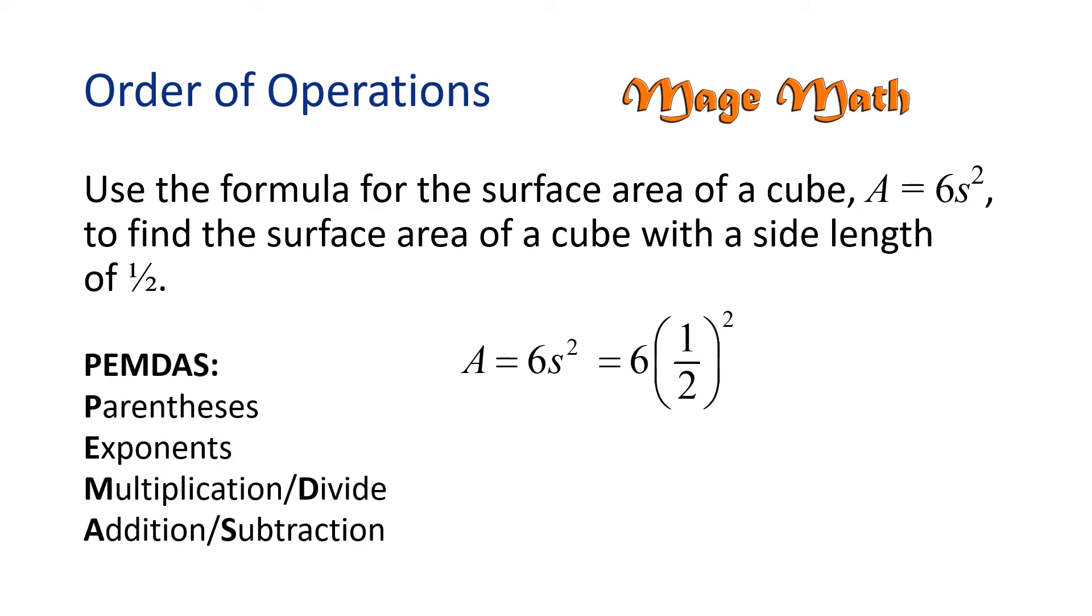We'll look at the exponent. 1 half squared is 1 fourth. So, now we need to multiply 6 times 1 fourth, which gives us 6 fourths. And that fraction can simplify to 3 halves. So, the surface area of the cube is 3 halves square units.